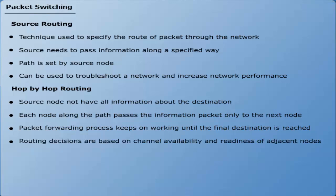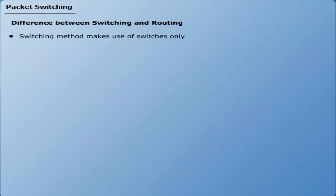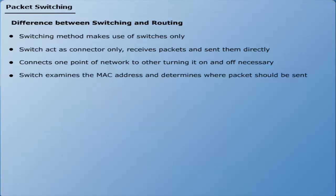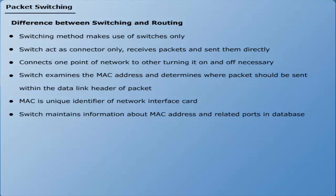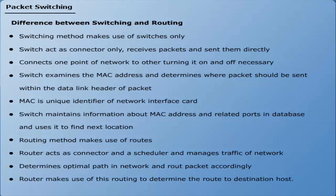Hop-by-hop routing decisions are based on channel availability and readiness of adjacent nodes. The switching method makes use of switches only — a switch acts as a connector, receives packets and sends them directly, connecting one network point to another. A switch examines the MAC address (unique identifier of the network interface card) and determines where a packet should be sent within the data link header. A switch maintains information about MAC addresses and related ports in a database. The routing method makes use of routers — a router acts as a connector and scheduler, manages network traffic, and determines the optimal path, routing packets accordingly.